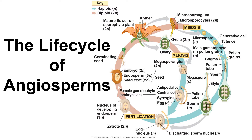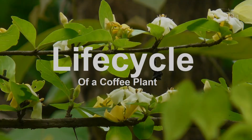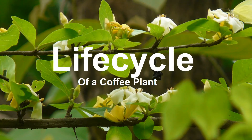This zygote will undergo mitosis as it develops into a seed, germinates, and grows into a young seedling plant. The life cycle of the coffee plant is outlined here as an example of a life cycle specific to the Rubiaceae family.